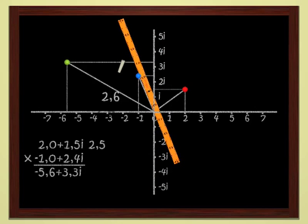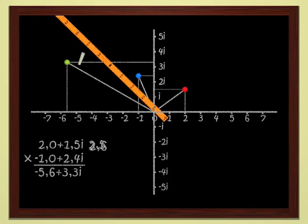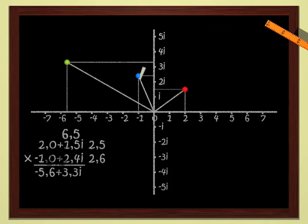For the blue point, I get 2.6. And for the green point, which is the product of the two points, I have 6.5. As a rule, the modulus of a product of two complex numbers is just the product of the moduli of the two numbers.